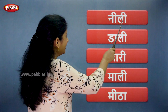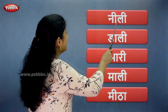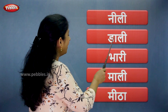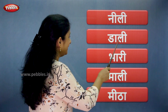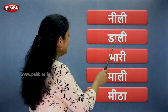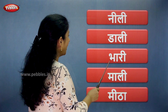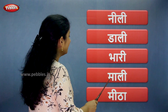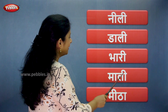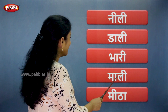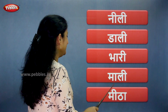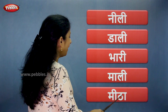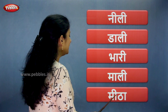नी... ली... नीली. डा... ली... डाली. भा... री... भारी. मा... ली... माली. मी... था... मीठा.